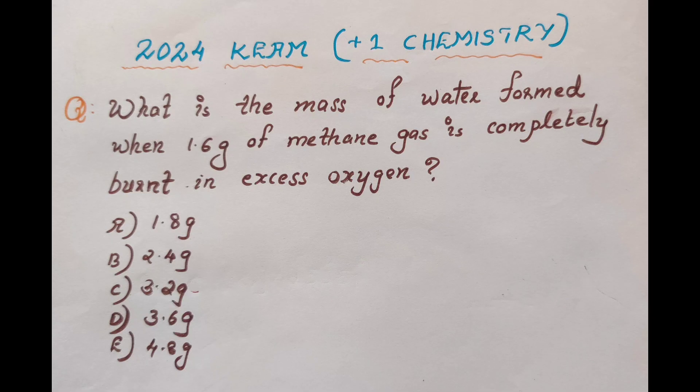What is the mass of water formed when 1.6 gram of methane gas is completely burned in excess oxygen? 1.6 gram of methane is completely burned in excess oxygen. That is the question. This is the first chapter of the plus 1 chemistry.